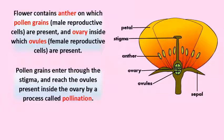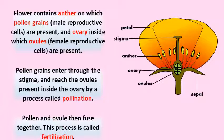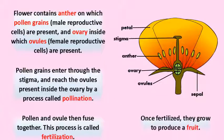Pollen grains enter through the stigma and reach the ovules present inside the ovary by a process called pollination. Pollen and ovule then fuse together — this process is called fertilization. Once fertilized, they grow to produce a fruit.